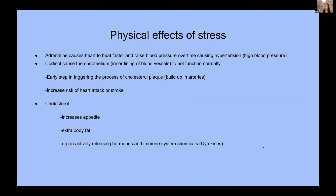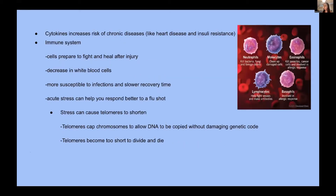Physical effects of stress. These hormones have a huge impact on our bodies over time. Adrenaline causes our hearts to beat faster and raises our blood pressure, which over time causes hypertension — meaning high blood pressure. Cortisol changes the inner lining of blood vessels, triggering the process of cholesterol plaque buildup in the arteries, increasing the chance of stroke or heart attack. Cholesterol also increases our body's appetite by telling our bodies to replenish energy with energy-dense foods, which is why we crave comfort food, and it causes extra body fat — an organ that actively releases hormones and immune system chemicals called cytokines.